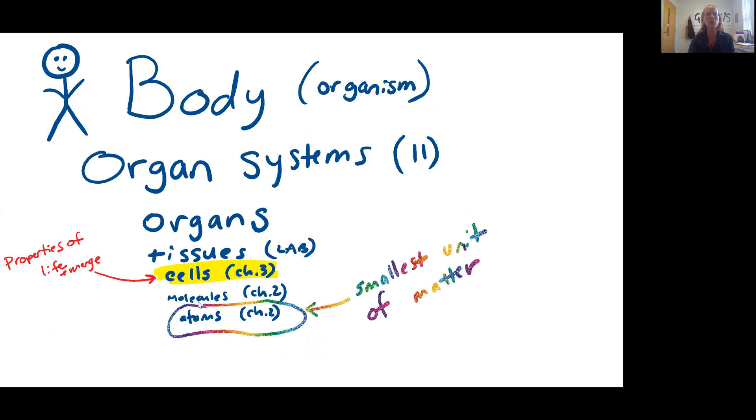In order to understand molecules, we do need to understand atoms, which are the smallest units of matter. So atoms are coming together to form those molecules, which are coming together to make your cells, which are coming together to make your tissues, which are forming your organs, which form your organ systems, which collectively compose your whole body. In this case, we've been looking at it from the big picture down to the small picture in terms of our organization.